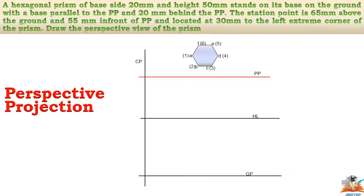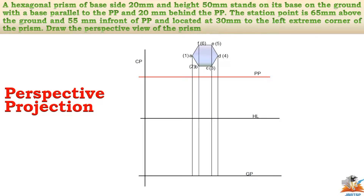Draw the projection lines and the front view with a height of 50mm, using the points A, B, C, D, E, F and 1, 2, 3, 4, 5, and 6.